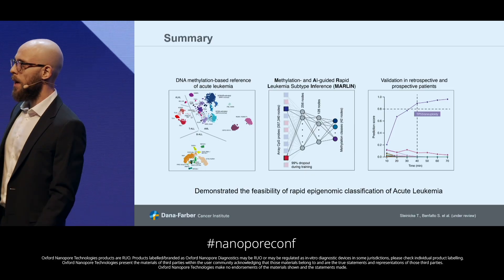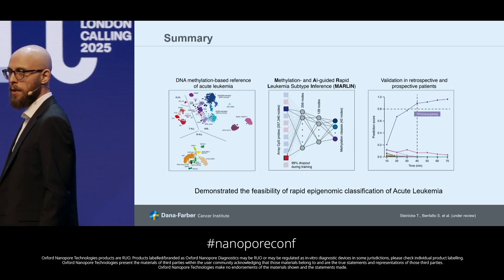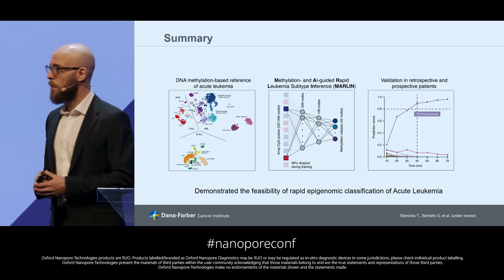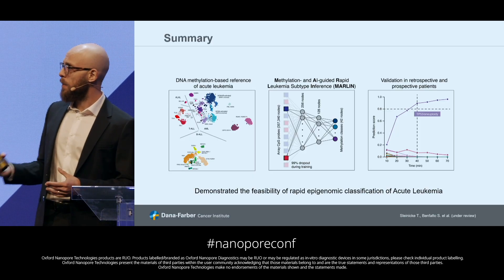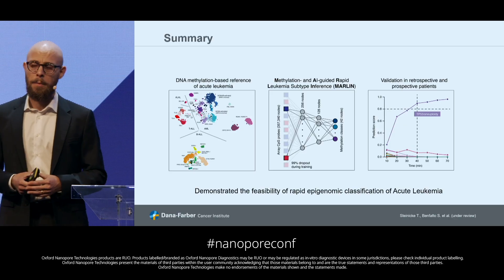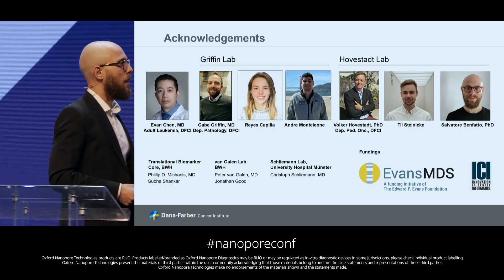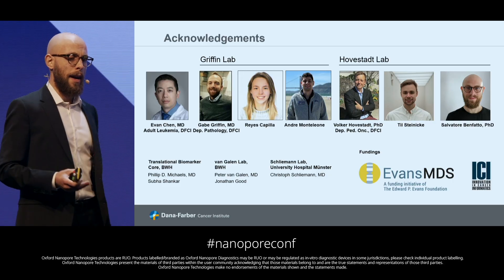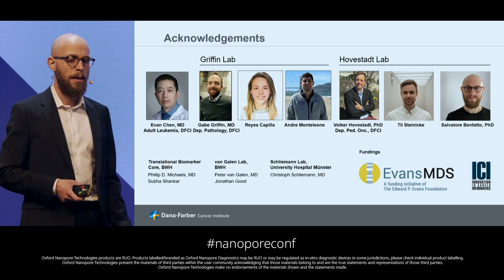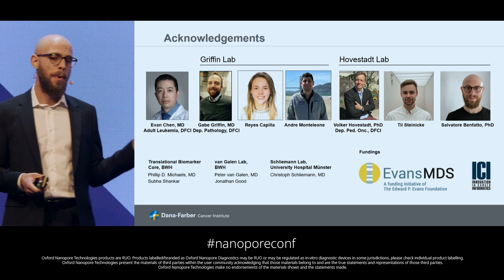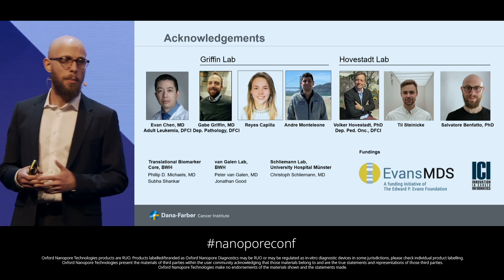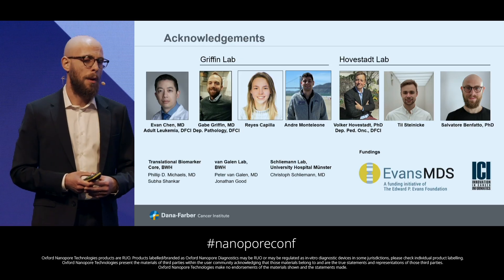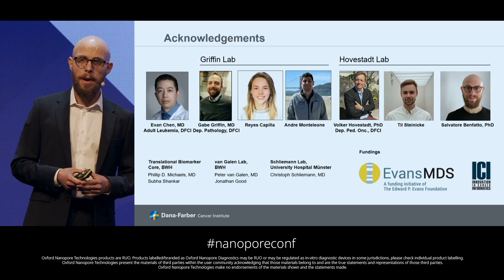To sum up, I showed you today that we demonstrated the feasibility of rapid epigenomic classification of acute leukemia, and I'm happy to share that this work is going to be published soon. I would like to thank the amazing team behind this work: Evan Chen from the clinical side, the Griffin lab with Gabe Reyes and Andre, and the computational part done by the Ovestad lab — Volker and Till — as well as our collaborators and funders.